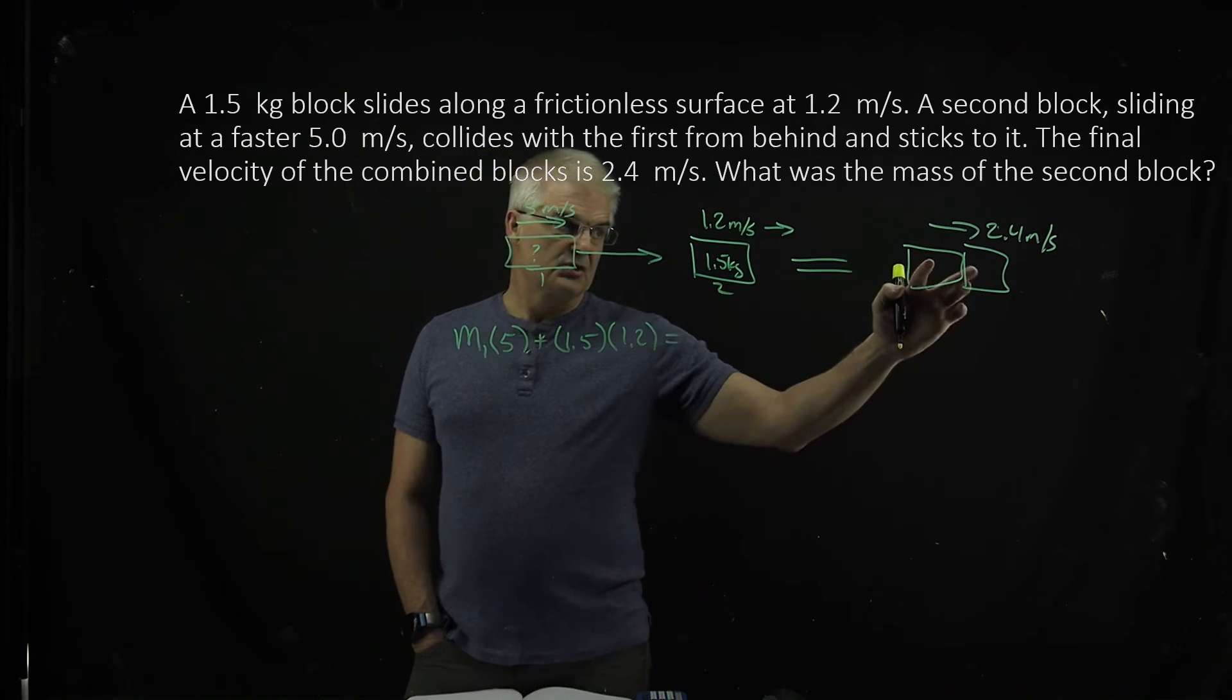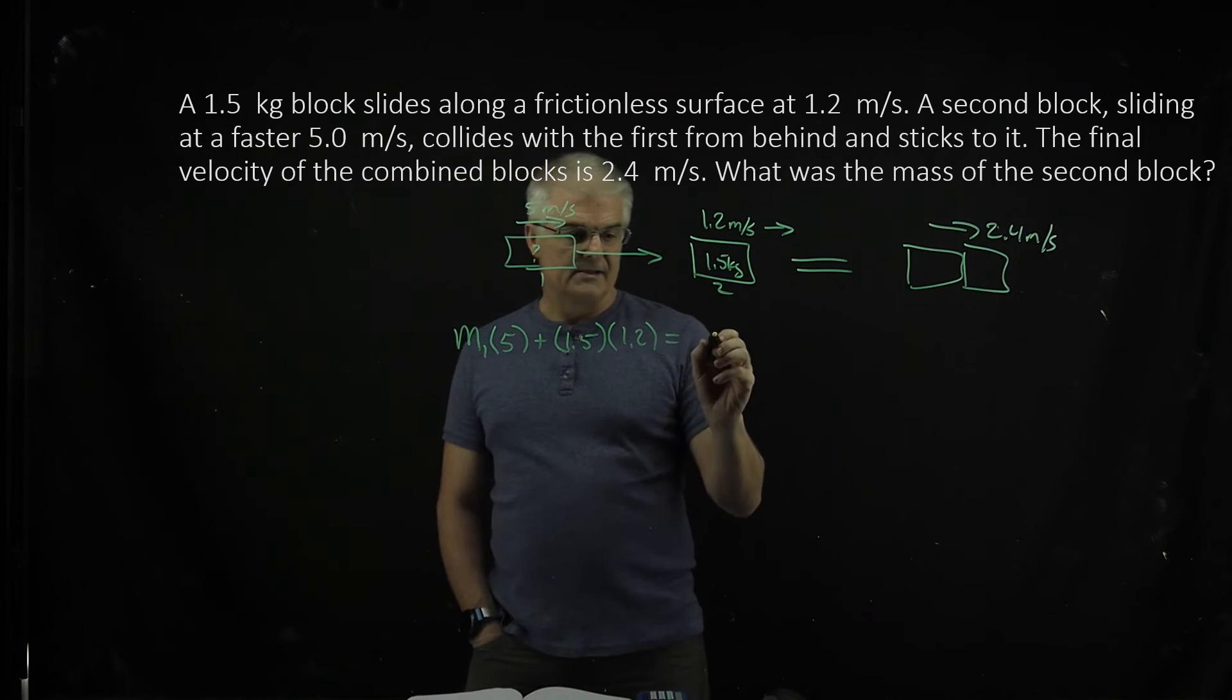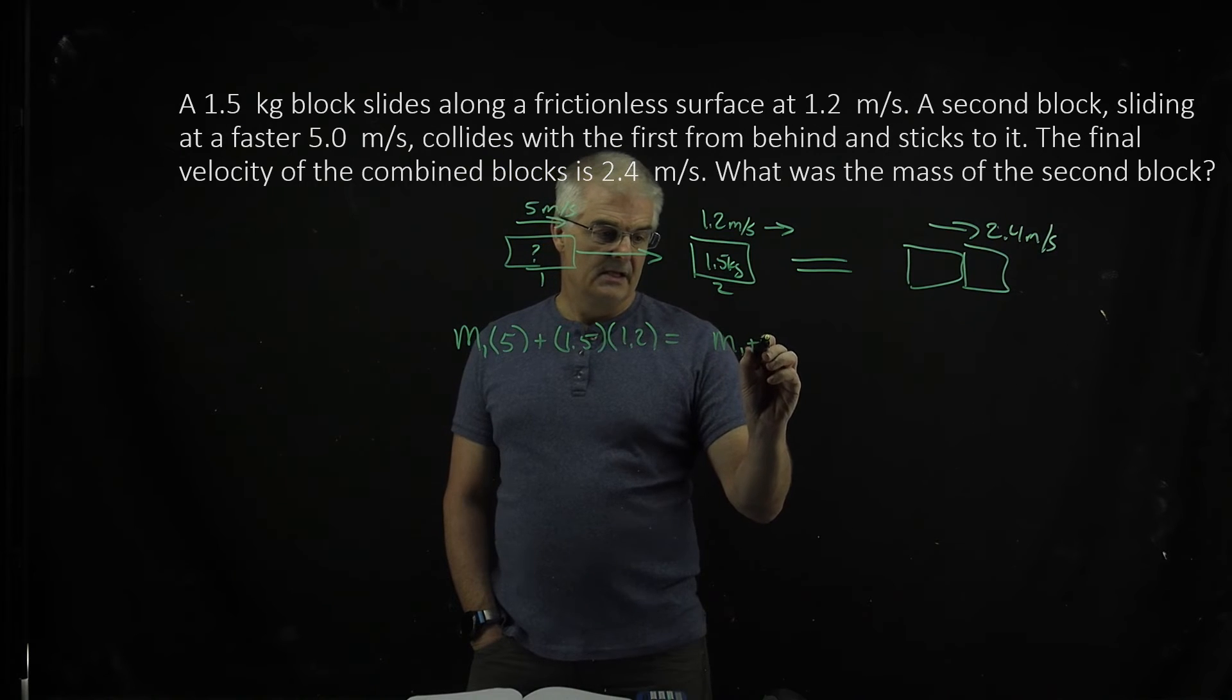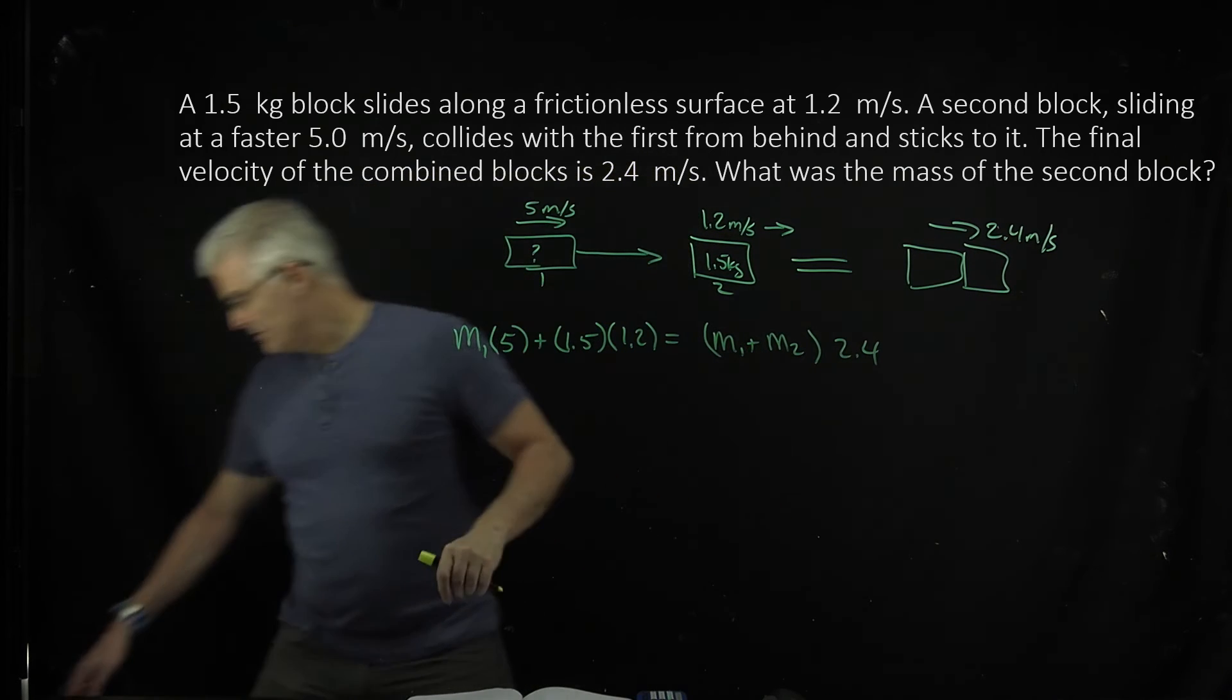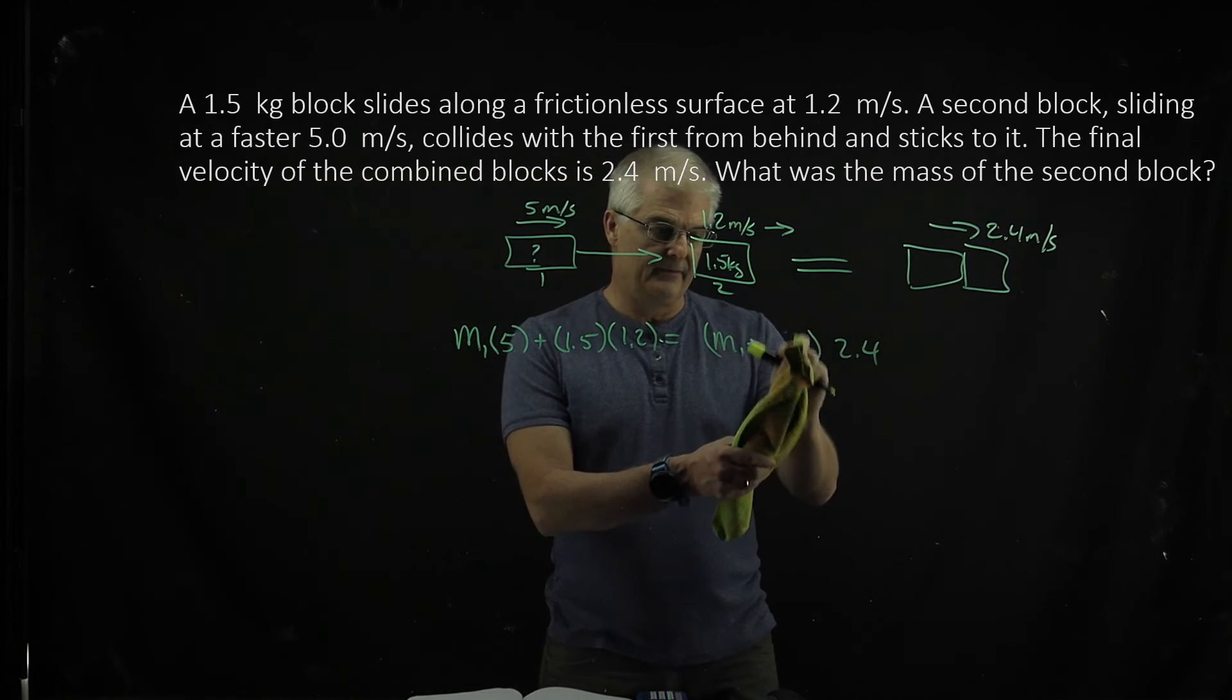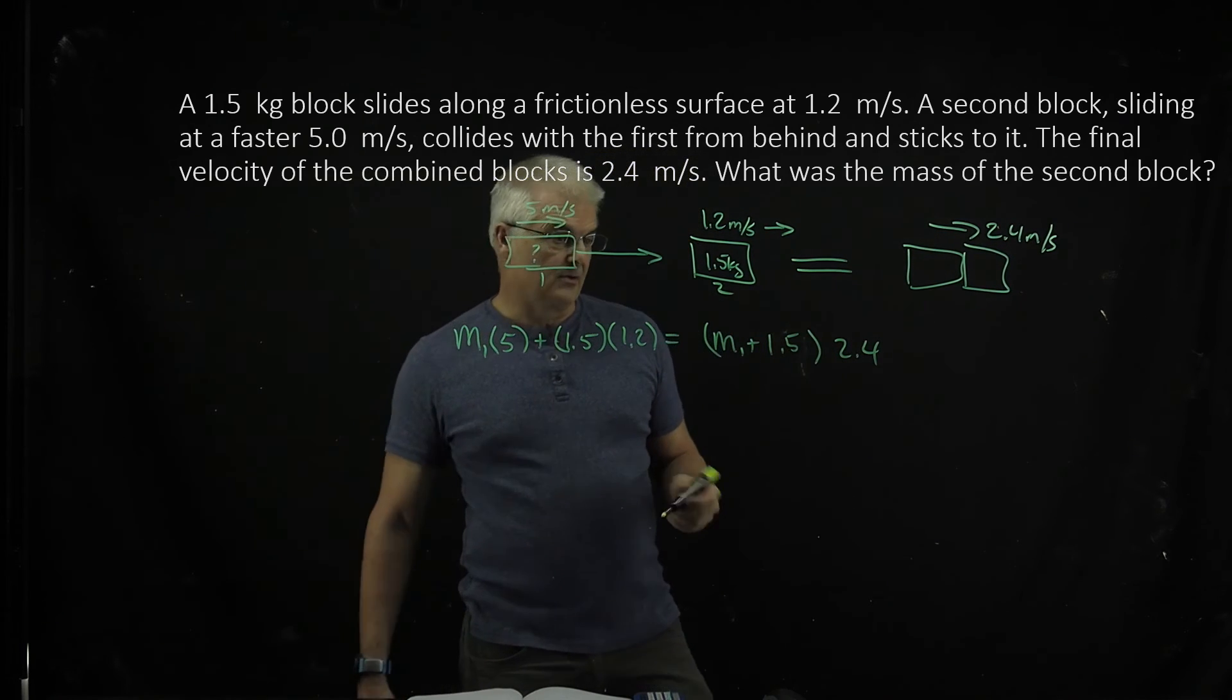Equals the total mass times its speed. Now, normally I'd say total mass, but I'm going to say equals M1 plus M2 times 2.4. But actually, what do we know? We know that M2 is 1.5. So this is 1.5. And that's our equation.